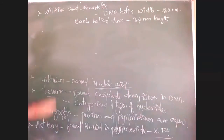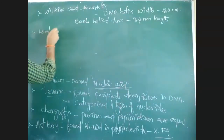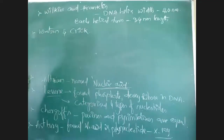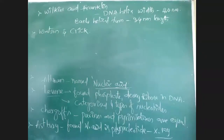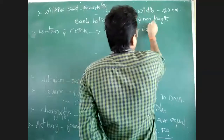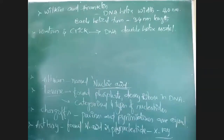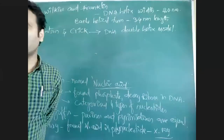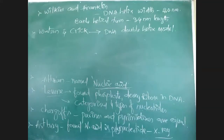Another scientist — Wilkins and Franklin — studied using X-ray techniques and found that the DNA helix has a width of 2.0 nanometers, or 20 Angstroms. They also studied that each turn of the helix has 3.4 nanometers length. Finally, scientist James D. Watson and Sir Francis Crick proposed the DNA double helix model, for which they were awarded the Nobel Prize.